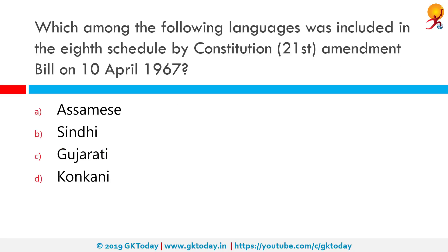Which among the following languages was included in the 8th Schedule by the Constitution 21st Amendment Bill on 10 April 1967? Correct answer is Sindhi. The 8th Schedule to the Constitution consists of 22 languages. Sindhi language was added in 1967. Thereafter, three more languages — Konkani, Manipuri, and Nepali — were included in 1992.